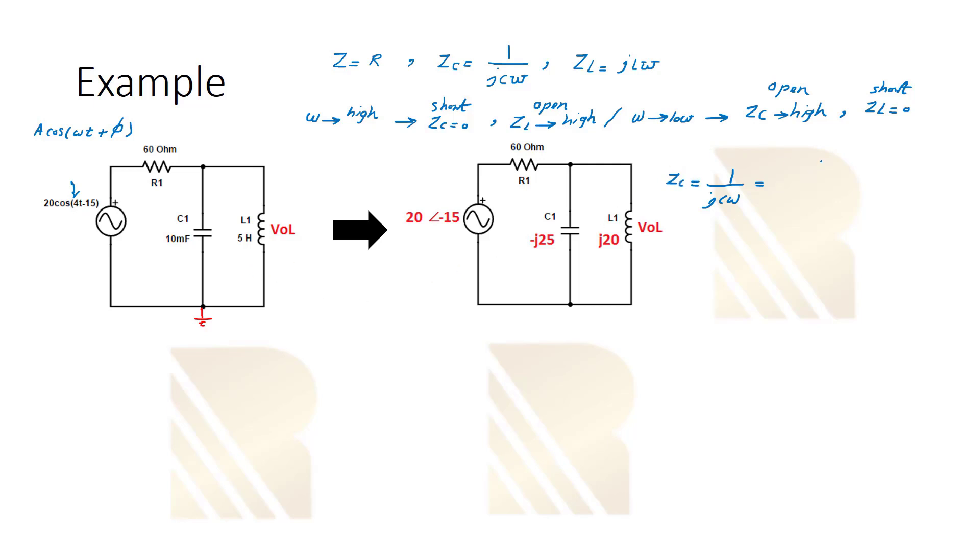Okay, one over j C omega, this is ZC. This is equal to one over j times our frequency 4 and the capacitance here is 10 milli. And if we calculate this it should be minus j 25.